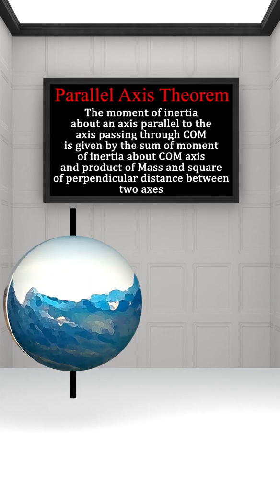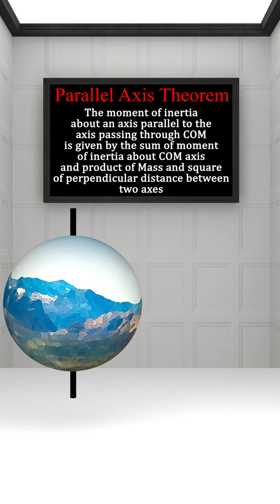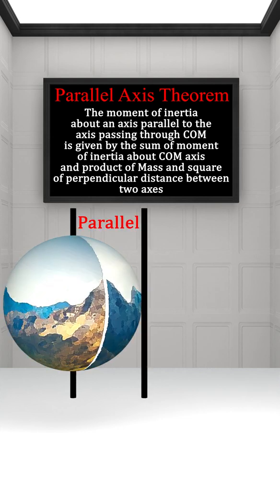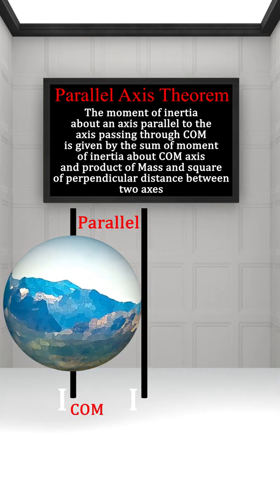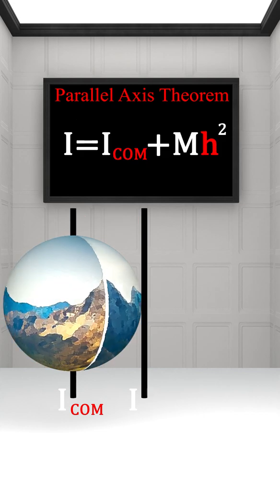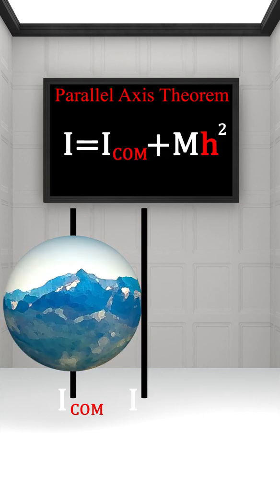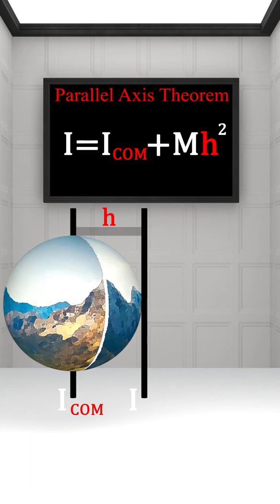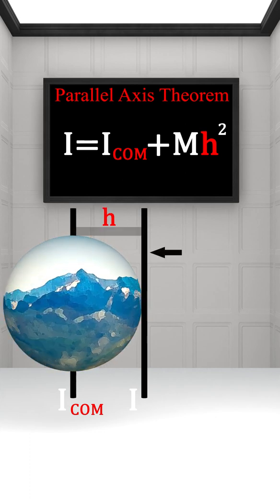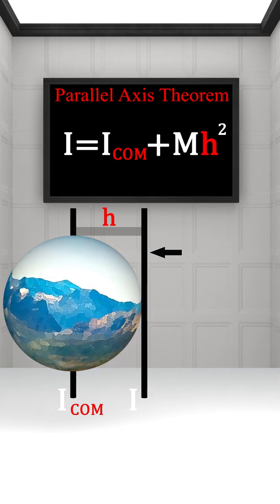The parallel axis theorem states that the moment of inertia of any body about an axis parallel to the axis passing through the center of mass is given by the moment of inertia about the center of mass plus mh², where h is the distance of this axis from the axis passing through the center of mass.